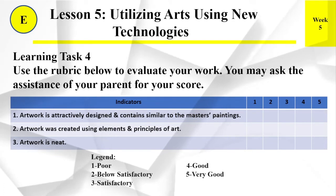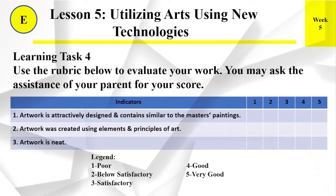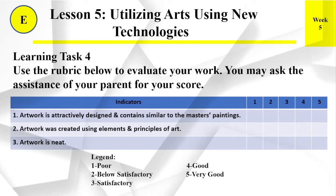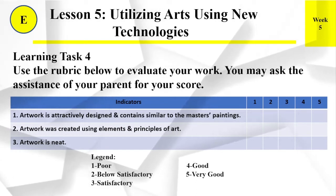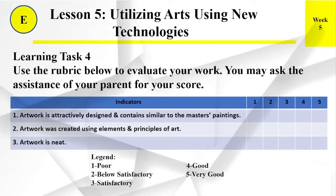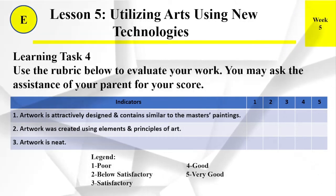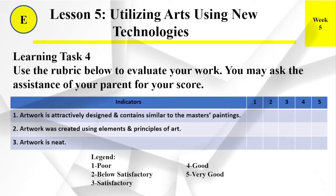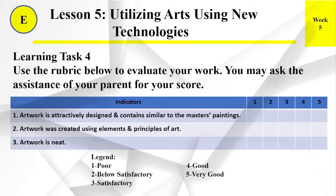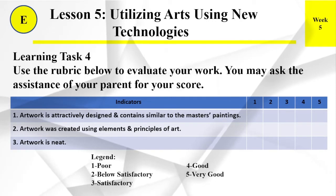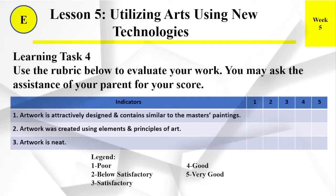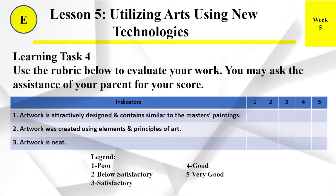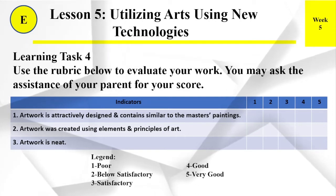Learning Task Number 4: Use the rubric below to evaluate your work. You may ask the assistance of your parents for your score. Here are the indicators. Number 1: Artwork is attractively designed and contains elements similar to the masters' painting. Number 2: Artwork was created using elements and principles of art.